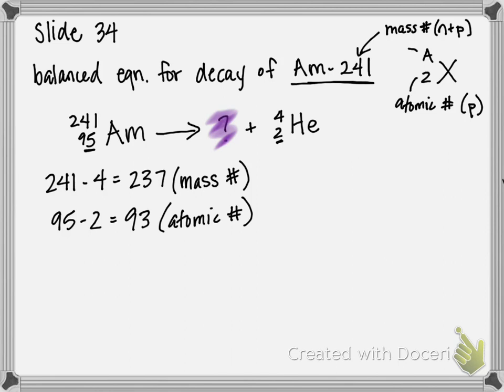Now we know we have 237 on top and 93 on the bottom. What's left is to figure out what element that corresponds to. We use 93, which is the number of protons — go back to your periodic table and figure out which element has 93 protons. You can see there's an Np symbol: that's neptunium. That's the element that our americium turns into when it undergoes alpha decay.